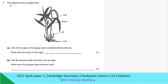The diagram shows a ginger plant. One of the organs of the ginger plant is labeled A. Write down the name of the organ. That is the stem, or the rhizome, or the stalk.